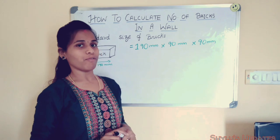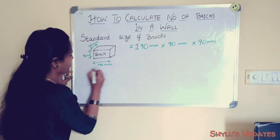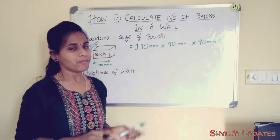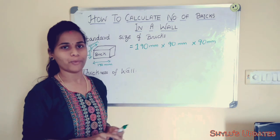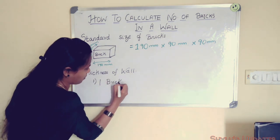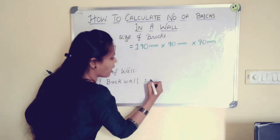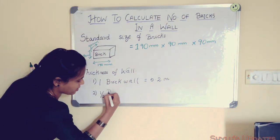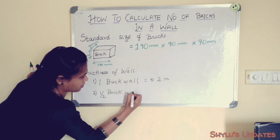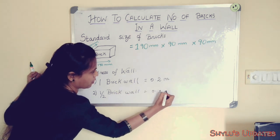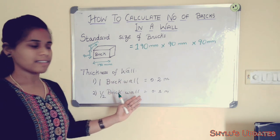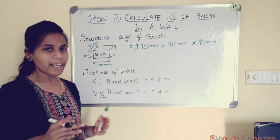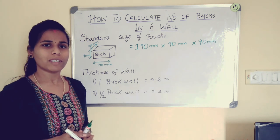Now we should also know about the thickness of the wall. There are two kinds of wall: one brick wall and half brick wall. One brick wall thickness is 0.2 meter, and half brick wall thickness is 0.1 meter. The thickness of the mortar joint is 10 mm.